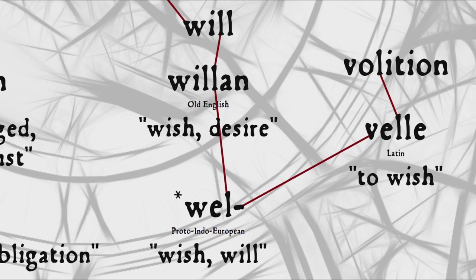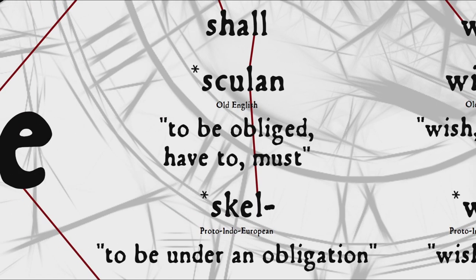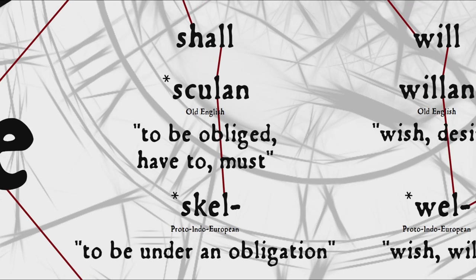Will comes from Old English willan, which generally meant to wish or desire, though already in Old English willan was just beginning to be used to express futurity. It goes back to a Proto-Indo-European root with largely the same meaning. One cognate of will is the word volition, which comes into English through Latin. So some would argue that even today there is some slight element of wishing or volition in the modern English auxiliary will. Similarly, shall comes from Old English shulan, which meant to be obliged, have to, must — and again, although it was already beginning to express futurity in Old English, it can be argued that even now it still has connotations of obligation or necessity.